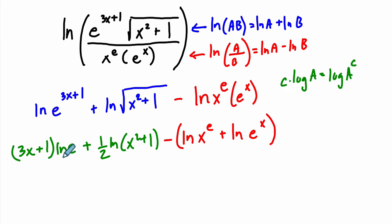Now, we go through this term by term. Natural log of e is just one because e to the first is itself, and that means it's just 3x plus one in our first term here, plus one half of the natural log of x squared plus one, nothing to do there.